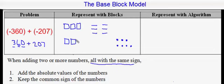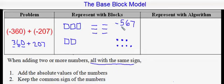I can simply count the number of flats: 1, 2, 3, 4, 5 — so there'll be a 5 in the hundreds place. Then 1, 2, 3, 4, 5, 6 rods — so there'll be a 6 in the tens place. And 1, 2, 3, 4, 5, 6, 7 units — so there'll be a 7 in the ones place. Don't forget that your final answer is found by keeping the common sign of the numbers. Since they both had a negative sign, your final answer will have a negative, so the answer is negative 567.